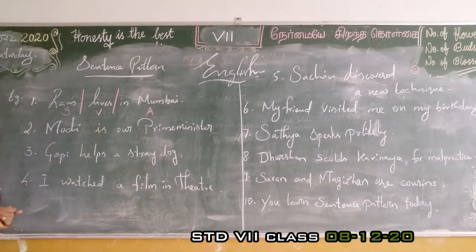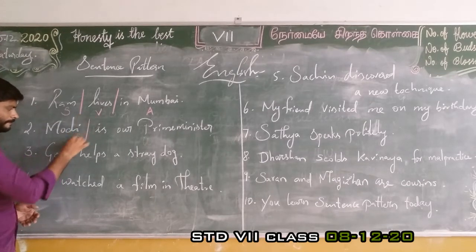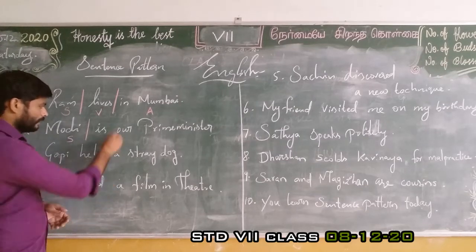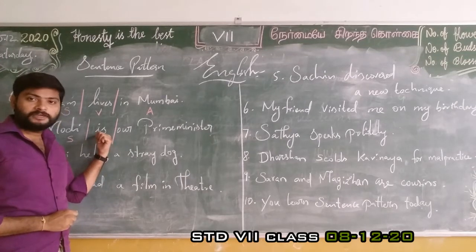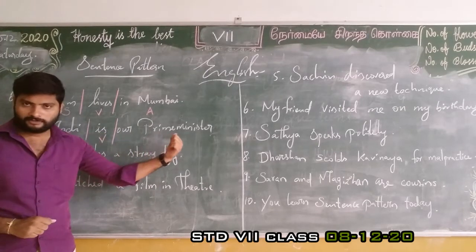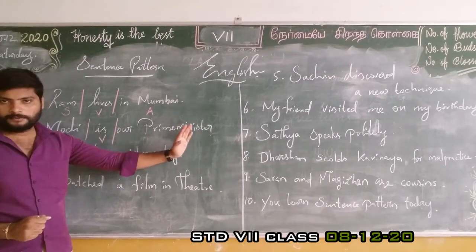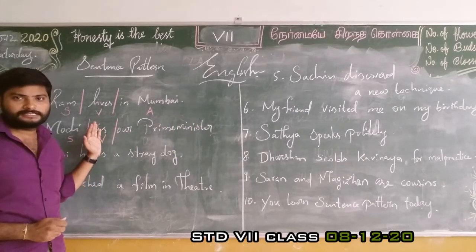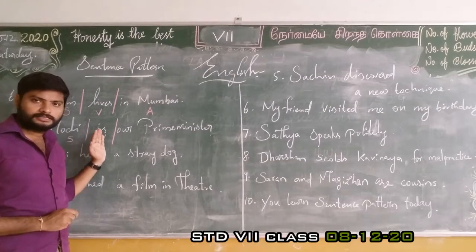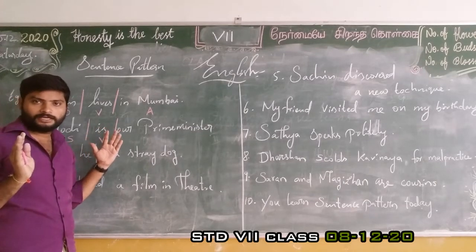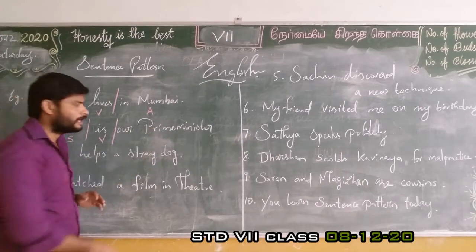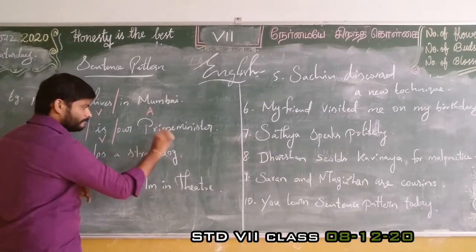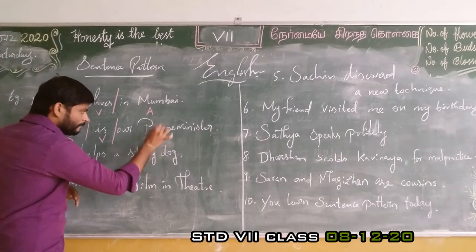Next sentence: 'Modi is our prime minister.' Modi is subject, 'is' is verb. As mentioned earlier, it is a 'be' form verb, so the complement part usually follows. Without the complement part, we cannot get the complete sense of the sentence — 'Modi is' alone is incomplete. So, 'our prime minister' completes the sense; this is complement.